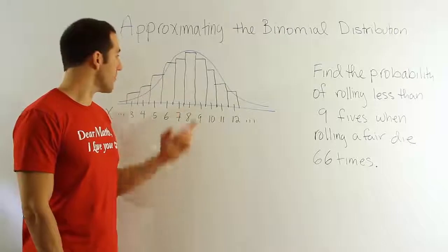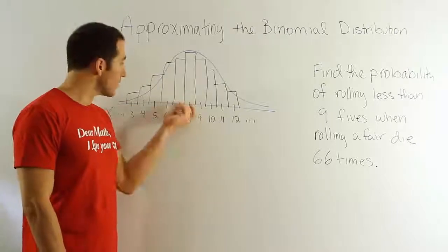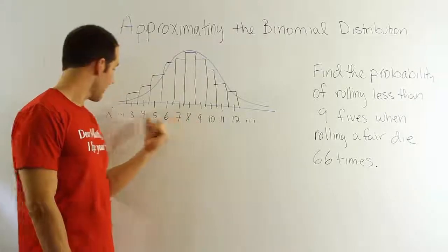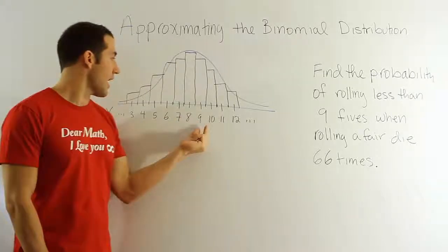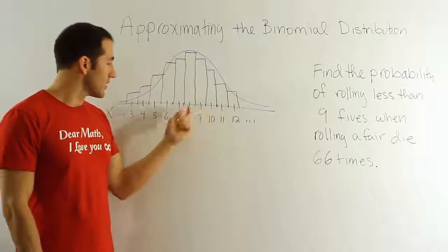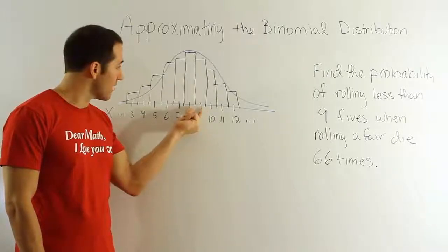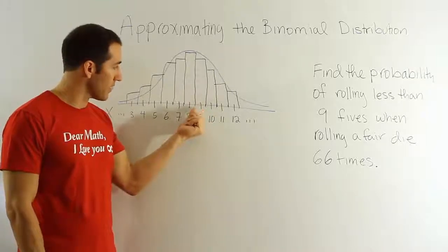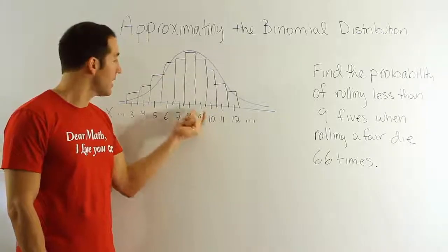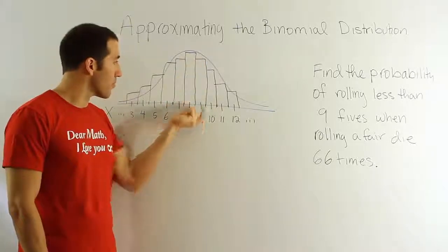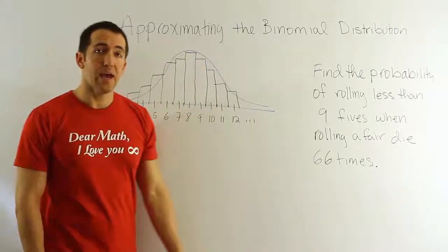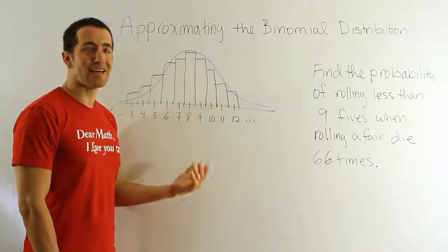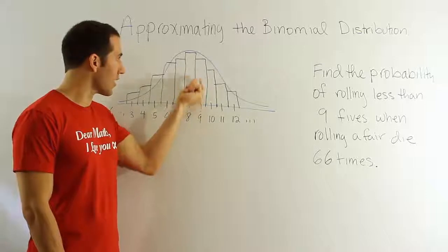The main thing to remember is that the binomial curve is discrete, so it has little rectangles of probability. For example, the probability that x equals 9 extends from 8.5 to 9.5 — that's the base of the rectangle for 9. The value 9 is right in the middle, and the area under the curve represents probability. To find the probability that x is exactly 9, you'd calculate the area of that rectangle.